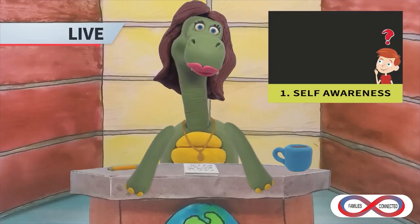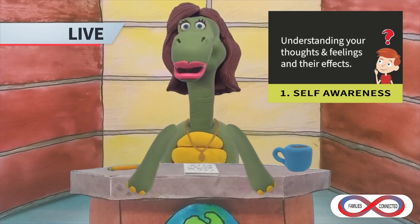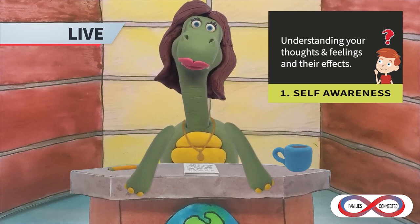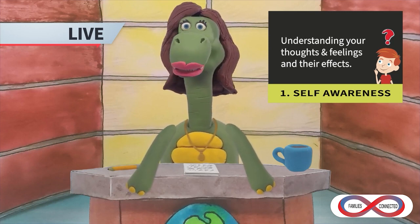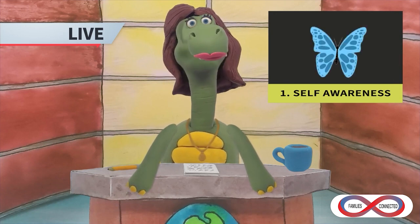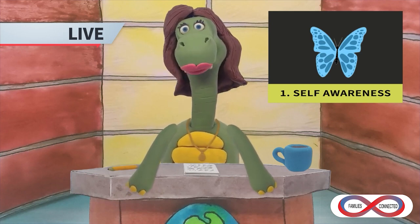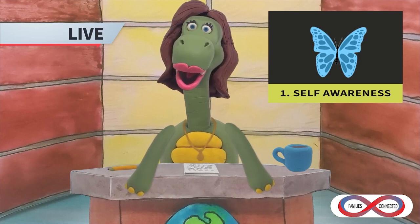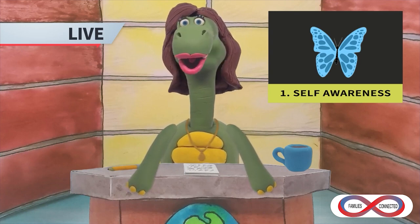Number one: self-awareness. Self-awareness is understanding what your thoughts and feelings are and how they may be affecting your behavior, where these feelings come from, and how to express them kindly. For example, your child might complain about butterflies in their tummy or a stomachache. Self-awareness helps them understand that they are really feeling nervous or fearful. With self-awareness, they can examine their feelings and start to understand why they have them.